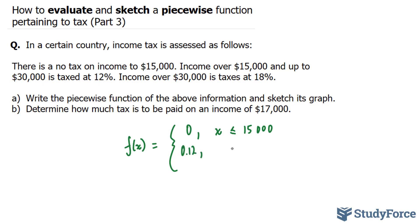0.12 when x is between $15,000 and $30,000. And given that this is a continuous function, and given that this is less than or equal to $15,000, you don't have to add the equal sign right here.